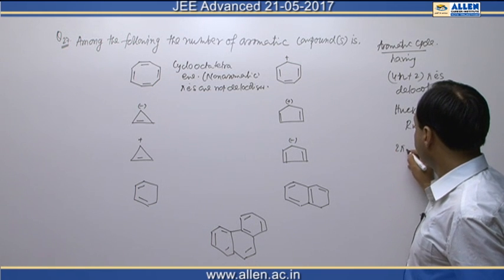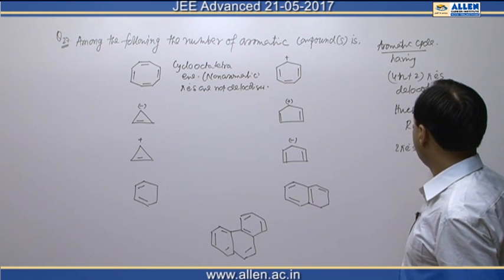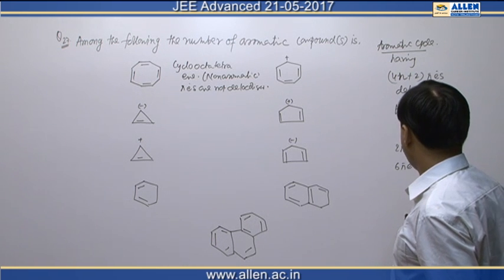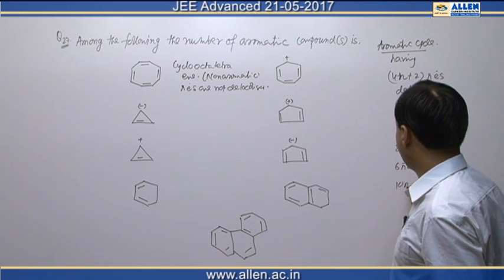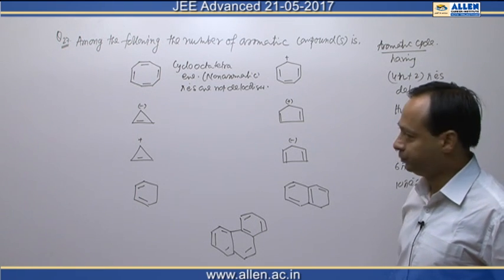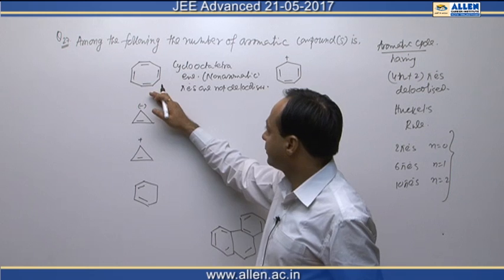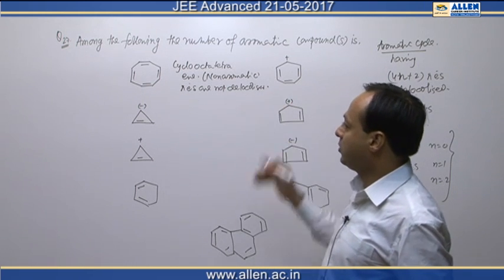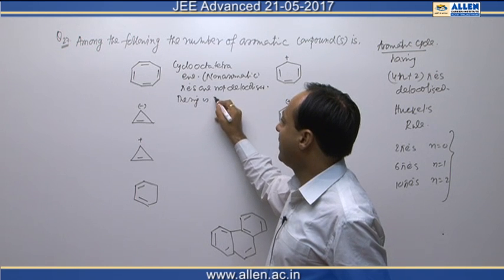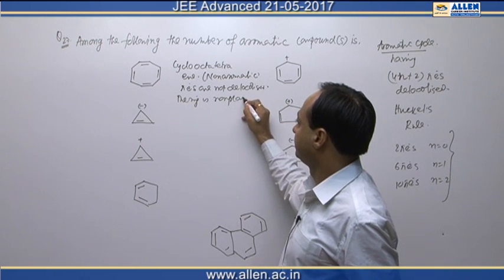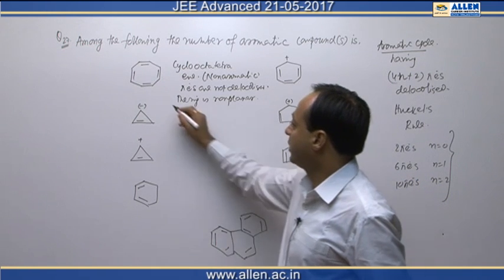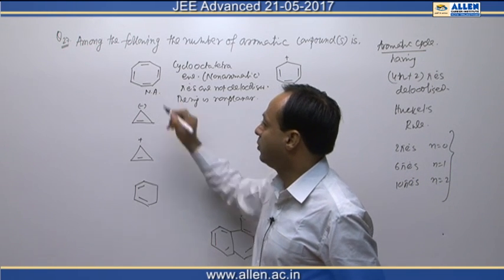So, 2 pi electrons when n=0, 6 pi electrons when n=1, and 10 pi electrons when n=2 — these are all aromatic counts. This first compound's pi electrons are not delocalized because the ring is non-planar, so it is a non-aromatic compound.